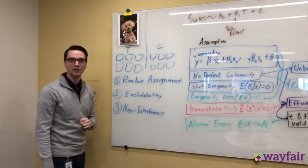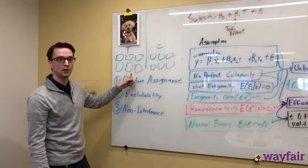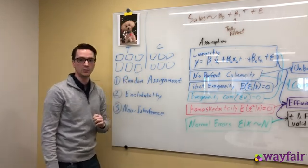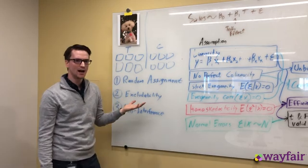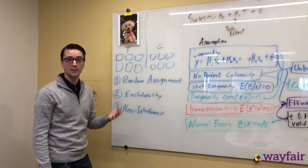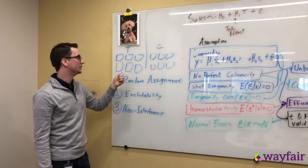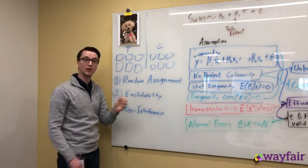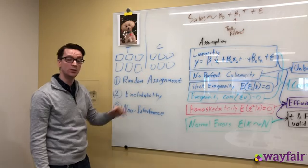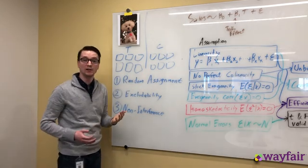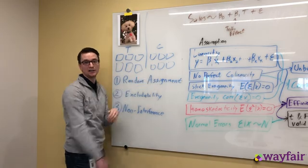Third, non-interference. This means that the treatment we apply to one group cannot affect the other group. For example, if we had low stock during the course of this experiment of dog beds, and teddy caused some people to buy dog beds in the treatment group such that they were out of stock for the control group and they couldn't buy them, this would bias our effect because the treatment is negatively impacting the control group.